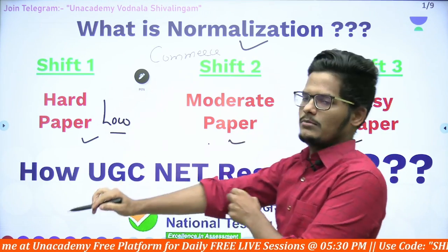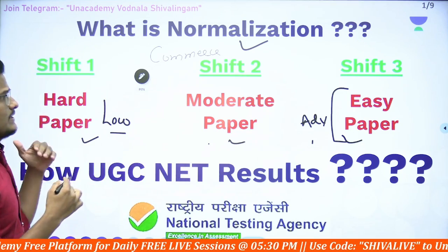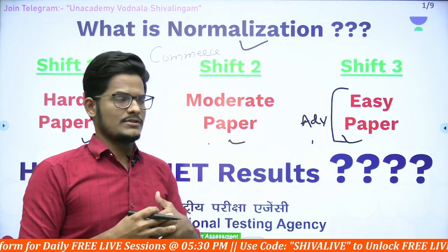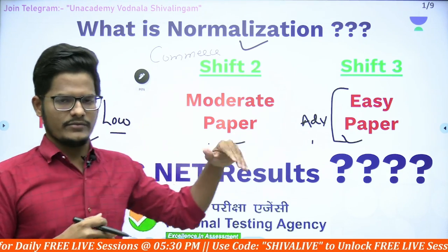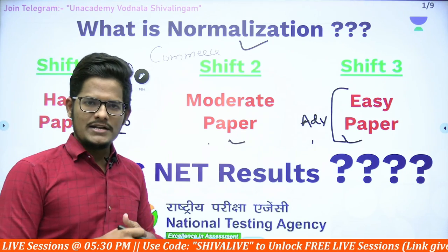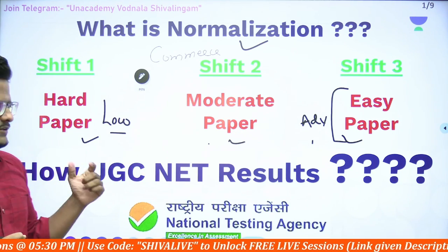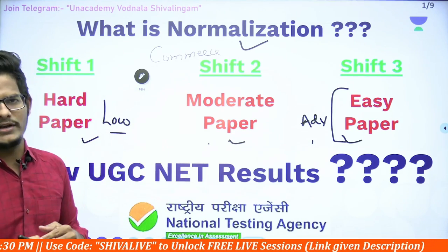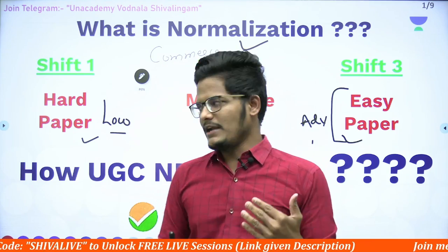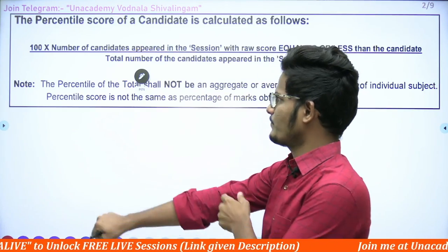To avoid that, in the Indian education system there is an evaluation procedure called normalization. Whenever a conflict like this arises, they adopt this procedure. NTA also follows normalization for the UGC NET examination and various other competitive examinations, because of multiple shifts for the same subject, in order to avoid conflict in results. I will explain how the UGC NET score is calculated with an illustrative example, including the formula used in normalization.